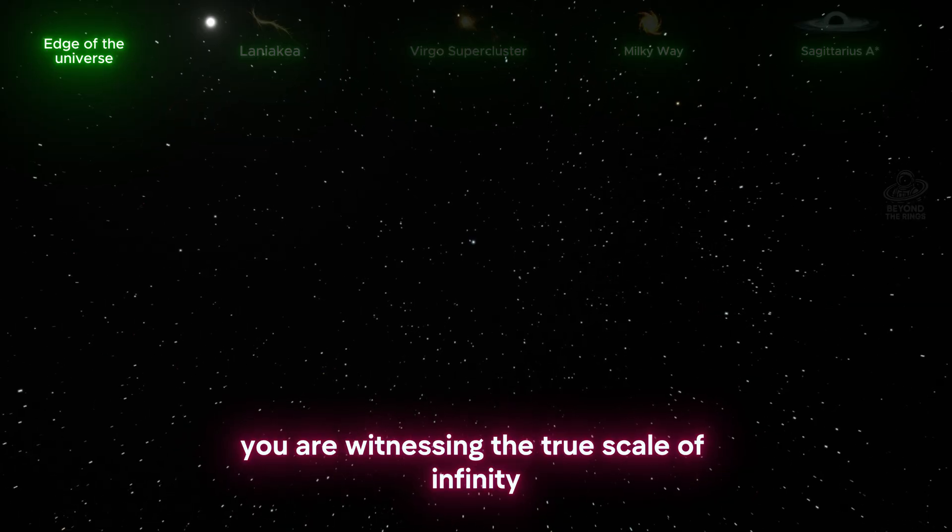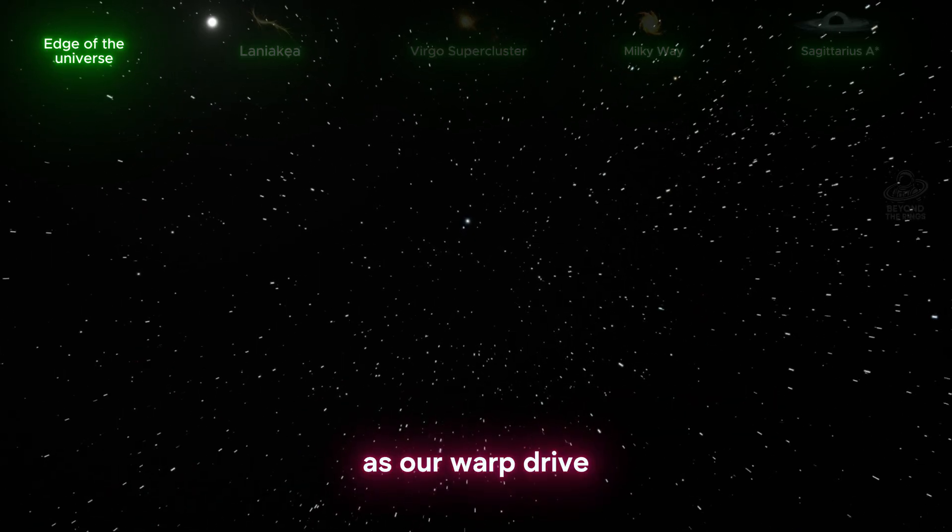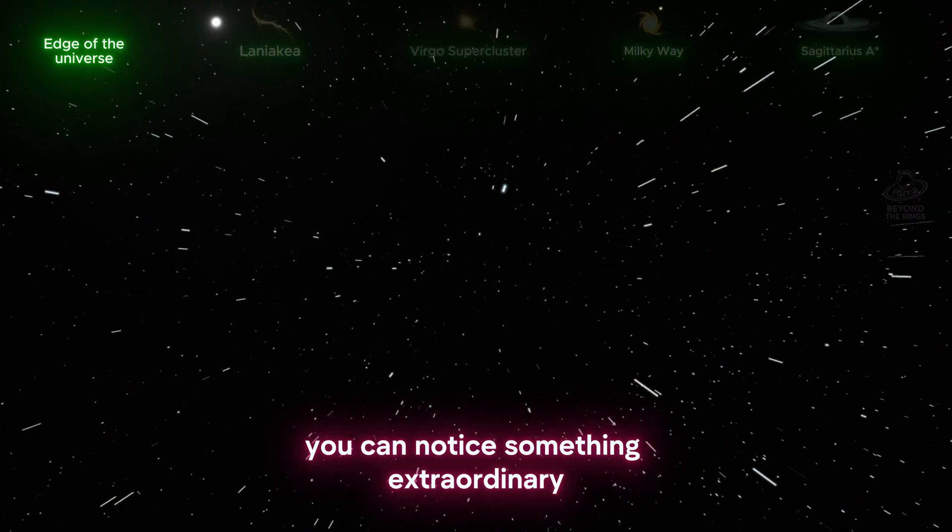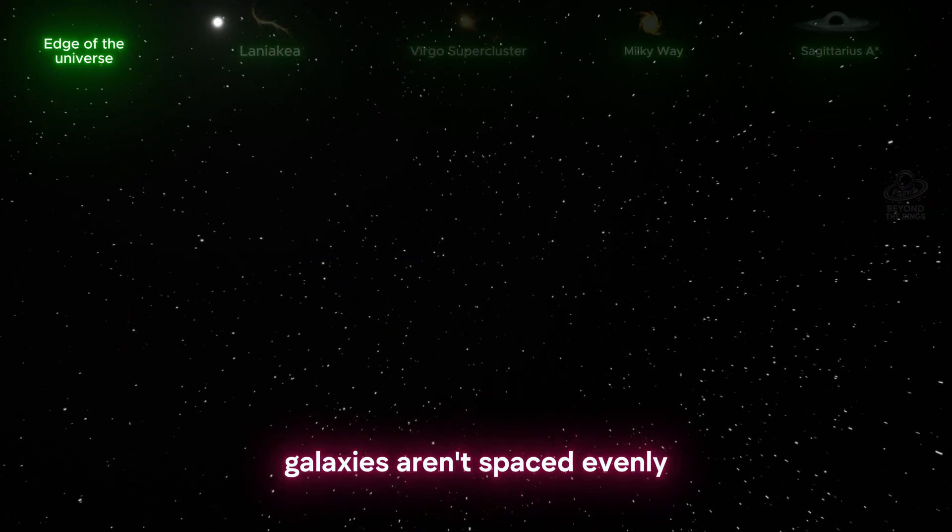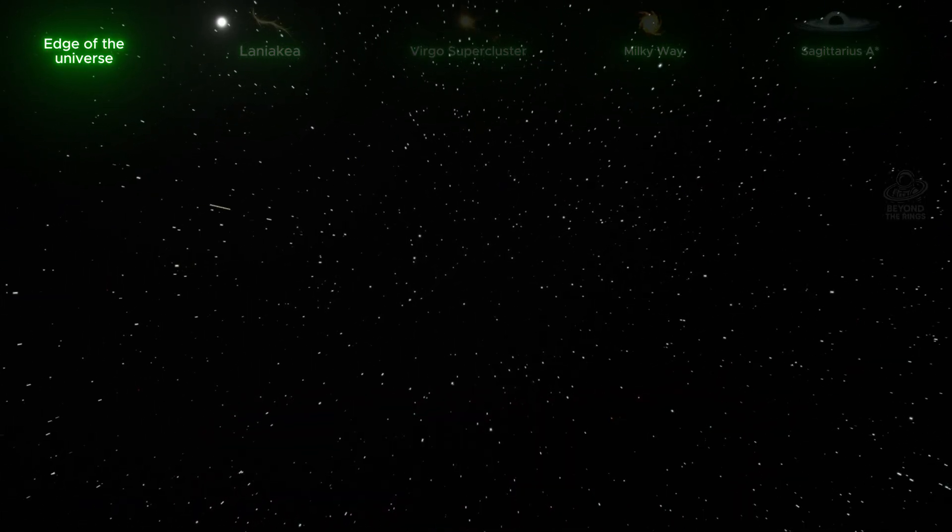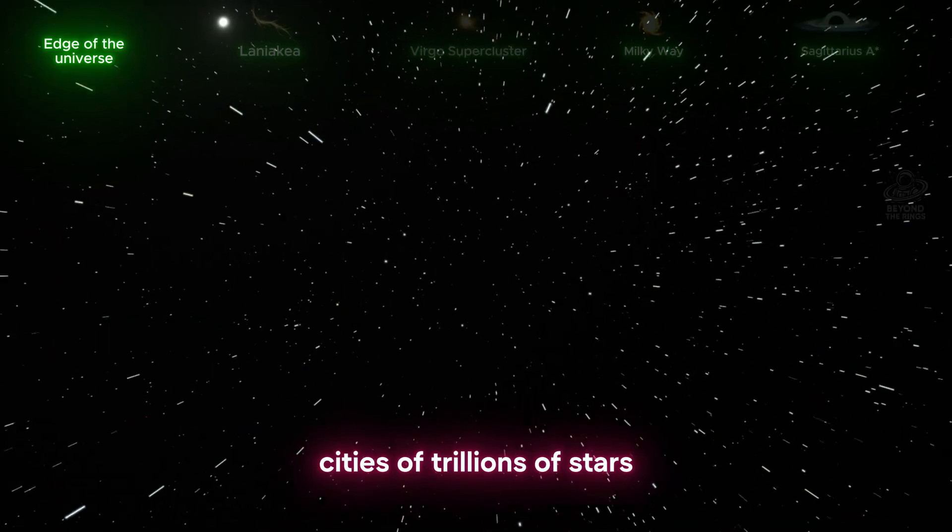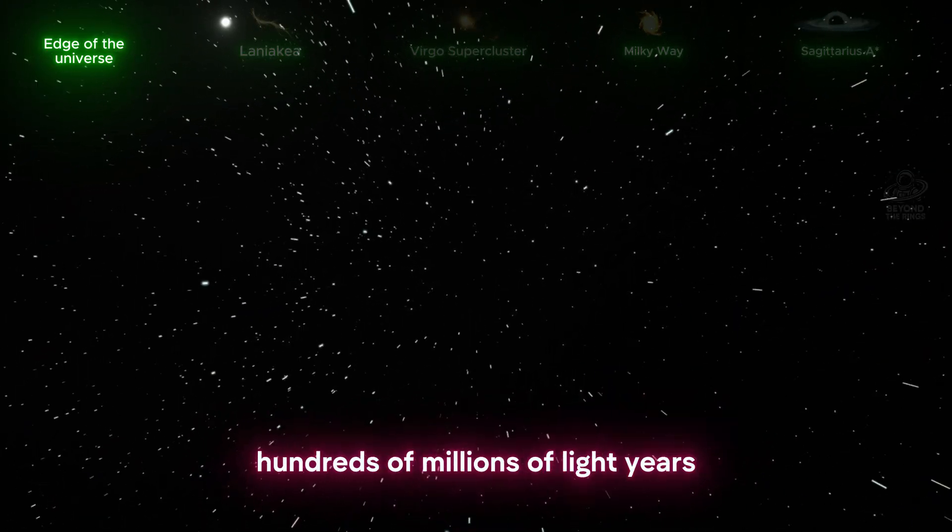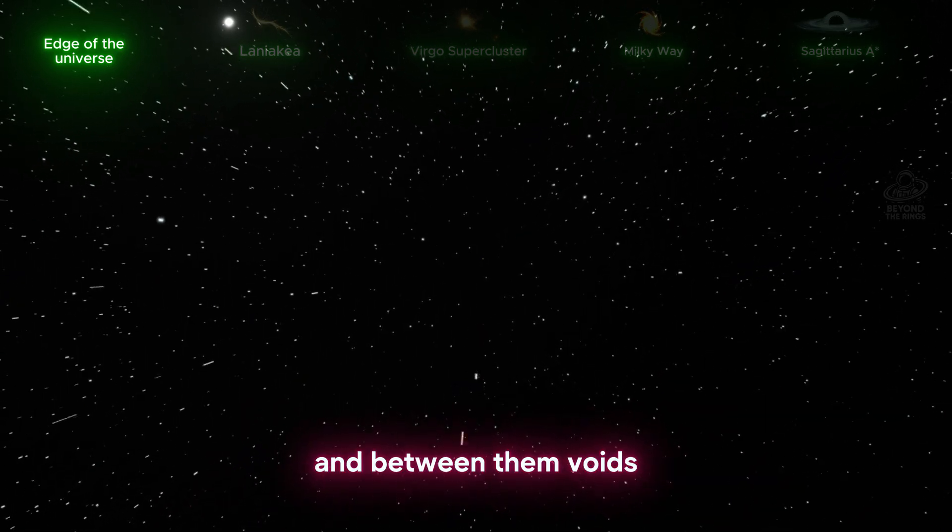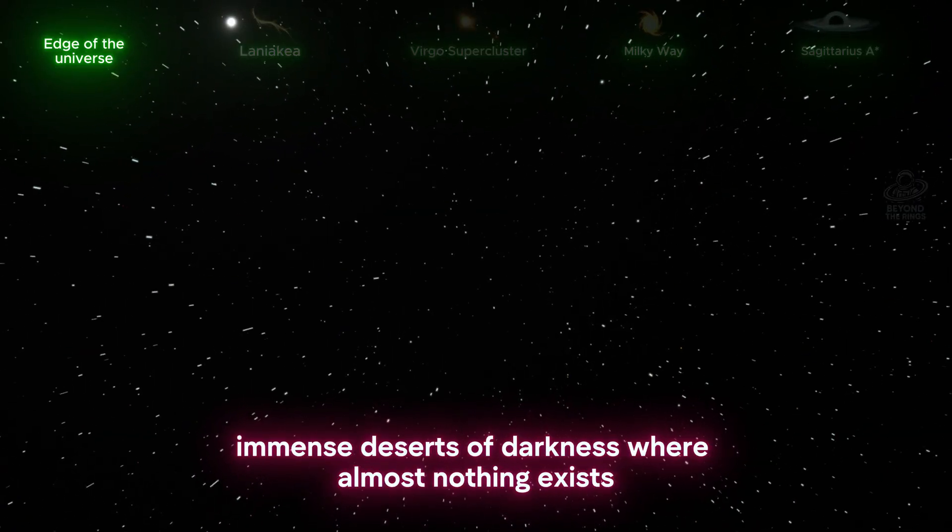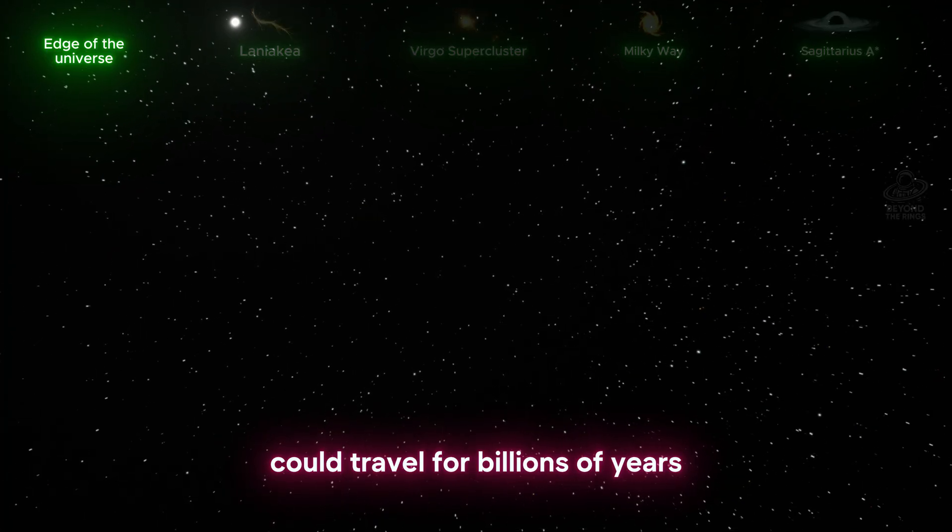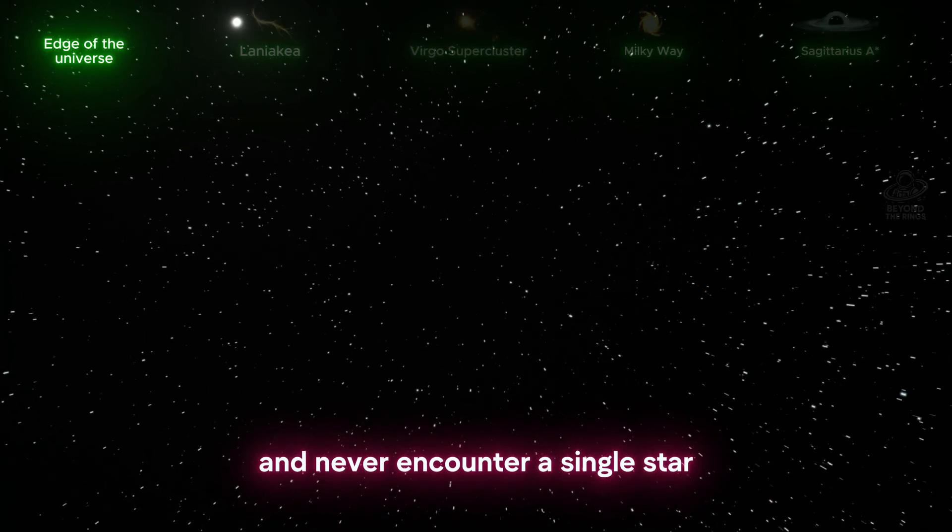You are witnessing the true scale of infinity. As our warp drive travels through the intergalactic space, you can notice something extraordinary. Galaxies aren't spaced evenly. Can you see it? They gather in titanic clusters, cities of trillions of stars connected by filaments that stretch across hundreds of millions of light years. And between them, voids - immense deserts of darkness where almost nothing exists. In those regions, you could travel for billions of years and never encounter a single star.